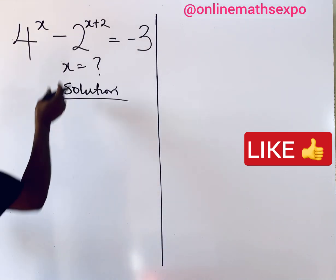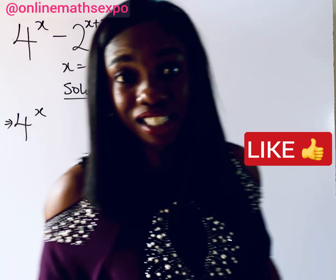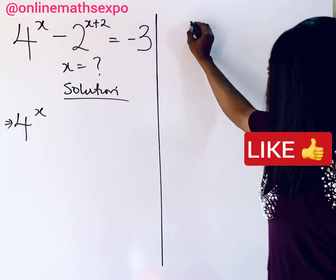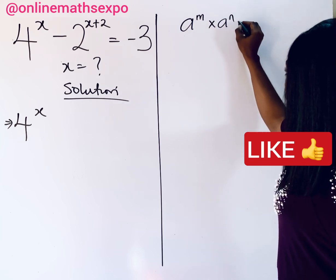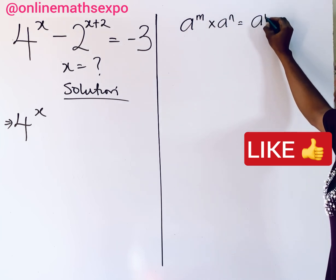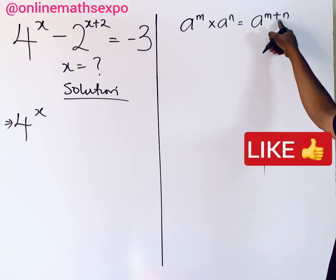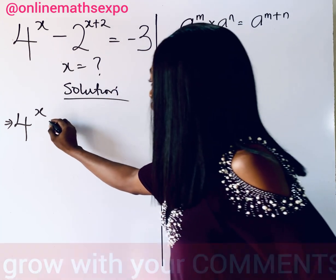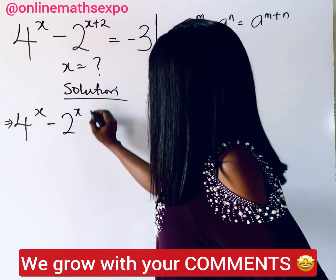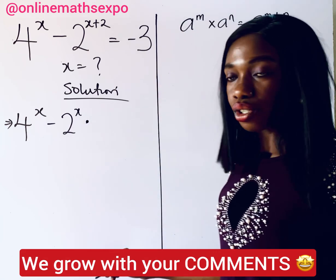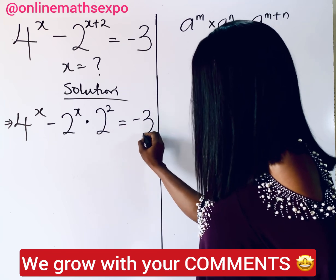We're going to begin with 4 to the power of x. I want to remind you of one of the tips: if you have a to the power of m multiplied by a to the power of n, it is a to the power of m plus n — the exponents turn to addition. So if you apply it here, we're going to have 2 to the power of x, then 2 to the power of 2, which is equal to negative 3.